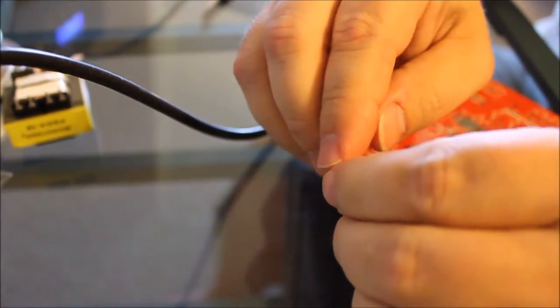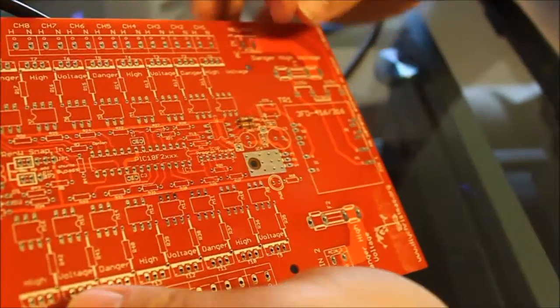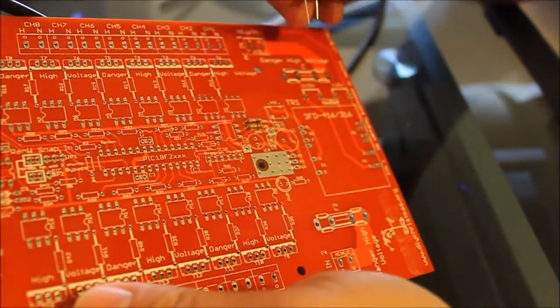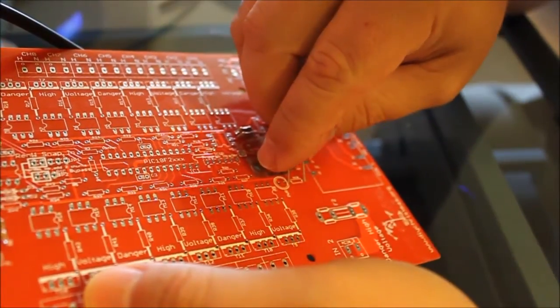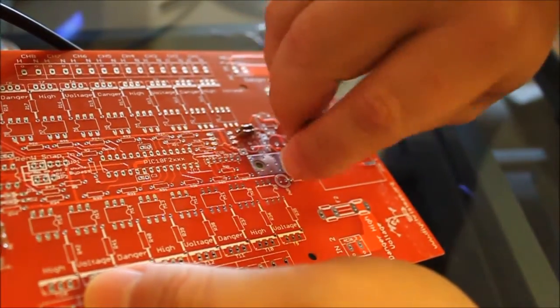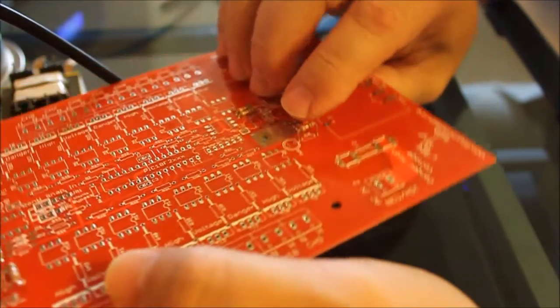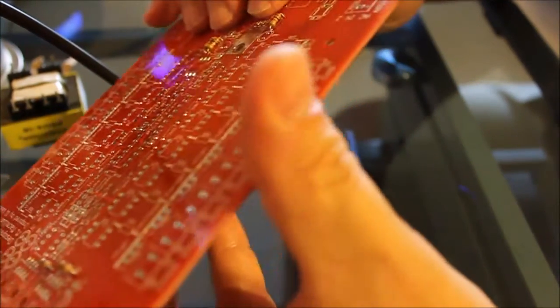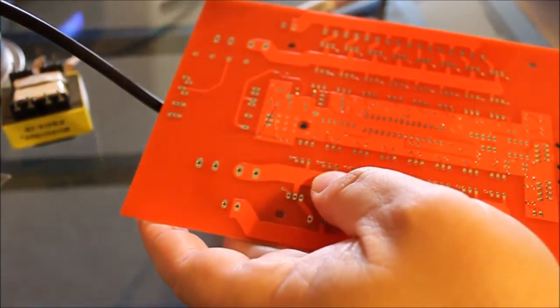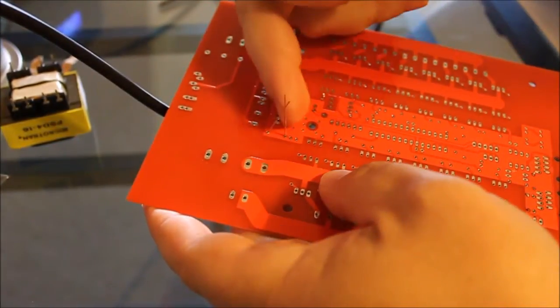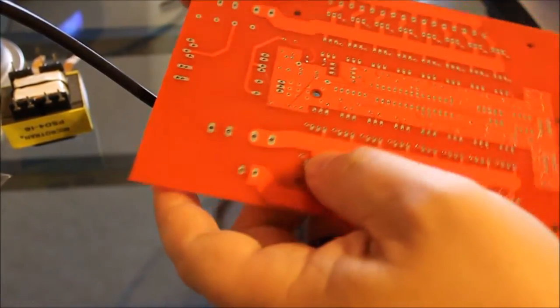Form the lead. Make sure it's straight. Now we've got R10 formed. You're going to slide it right through the hole. Now push it down pretty much until it stops. Flip it over. And spread the leads back out slightly. And we're ready to solder it in.